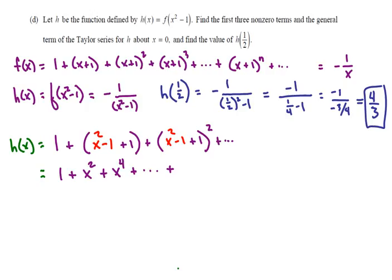But then they ask for the general term. So we start with the zeroth term. The zeroth term is one, then the first term is x², the second term is x⁴, the third term is going to be x⁶, and so you can see then that the general term should be x^n.